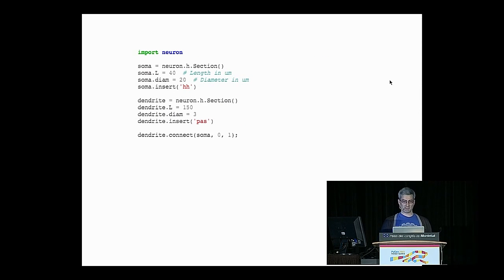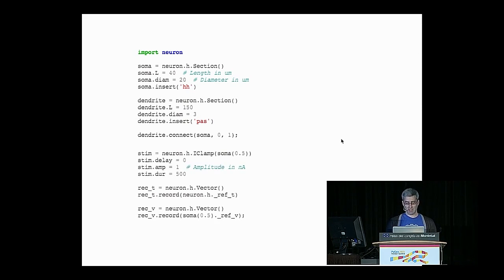So this is going to be a simplified cell, just has two parts, a soma and a single dendrite. Essentially what we're doing here is setting some parameters. The length of our soma is going to be 40 micrometers and 20 micrometers in diameter. We're going to insert some ion channels into there. The dendrite is going to be 150 micrometers long and 3 micrometers in diameter. It has a different set of ion channels. Connect it up together.